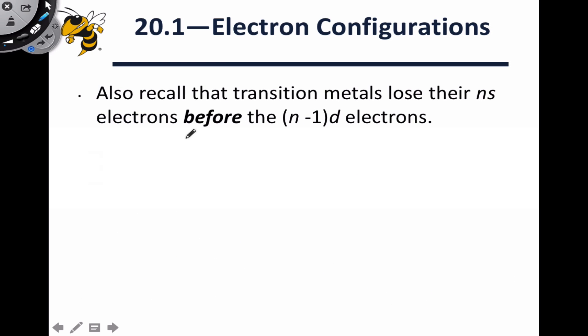We most commonly deal with transition metal ions rather than the metal atoms themselves. And one thing that's important to appreciate with the ions is that the ns, say the 4s electrons for the first row transition metals, are lost before the n-1d electrons, say the 3d electrons for those first row elements.